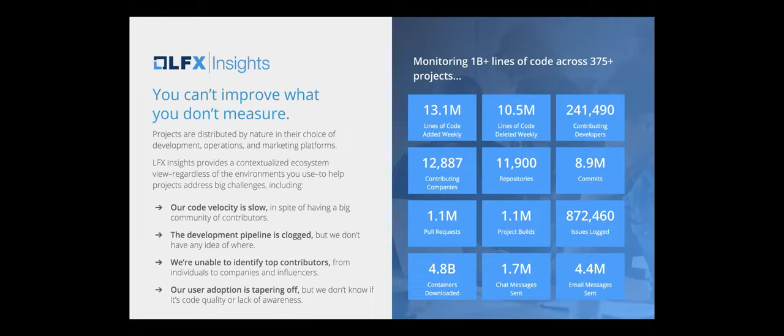The challenge is how to get insights with this distributed nature. Problems projects are trying to solve include: code velocity is slow but bottlenecks are unclear; the development pipeline is clogged but it's unknown exactly where — whether it's the workload on maintainers or somewhere else. We're unable to identify who the top contributors are, not just in terms of code but also influencers in the community.